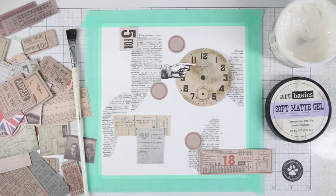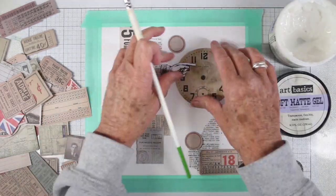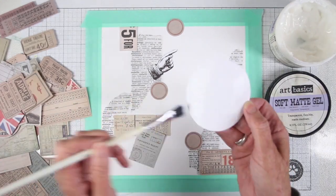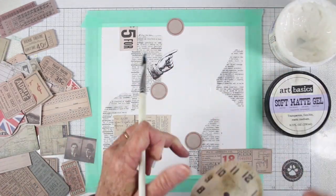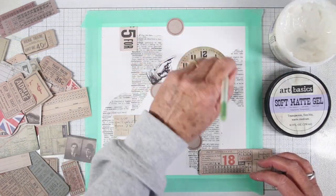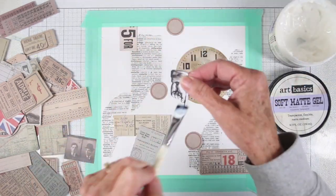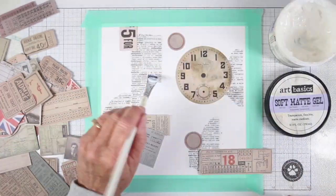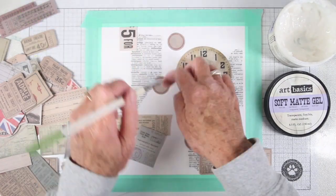I'm also using some ephemera, the Expedition from Tim Holtz, and I've picked out a few pieces to put onto my collage. I really want to let you know I'm doing just a free-for-all. I have no real plan for this except for pulling something out and then putting it down. The soft matte gel acts as a glue, so this is a really good base for all your paints and your papers.